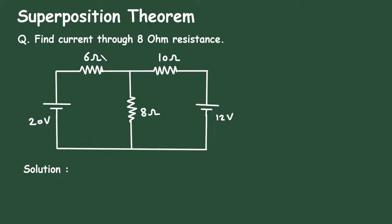To get the free notes of electrical circuits, check the link in the comment section and install the app for free. Superposition theorem question: find current through 8 ohm resistance. Here in this circuit, we have to find the current through this 8 ohm resistance by using superposition theorem.